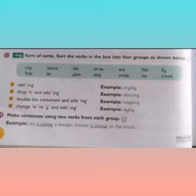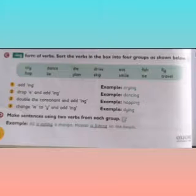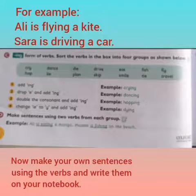We have to make sentences from each group — the groups we take from exercise C — and use two verbs from each group to make a sentence. For example: Ali is eating a mango, Hassan is fishing on the beach, Sara is dancing on the floor, and Ahmed is planning for a trip. This is the way you are going to make your sentences.